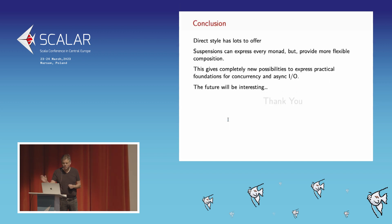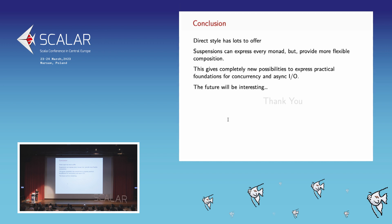In conclusion, direct style has lots to offer. Suspensions can express every monad but provide much more flexible compositions. I believe this gives completely new possibilities to express practical foundations for concurrency and async IO. The future will be interesting — thank you.